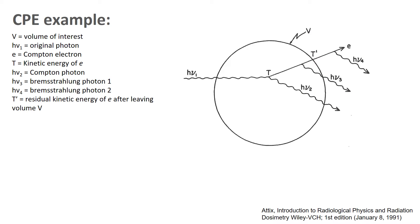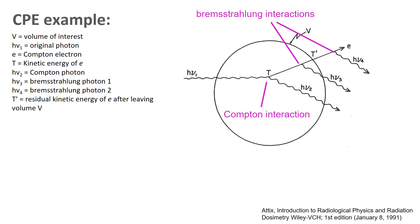Let's revisit an example from a prior video in terms of charged particle equilibrium. Here we have a photon that enters a volume h-nu-1, there is a Compton interaction, and an electron is given kinetic energy T, along with a Compton photon h-nu-2. That electron then undergoes collision events but also two bremsstrahlung interactions that give off photons h-nu-3 within the volume and h-nu-4 outside of the volume.